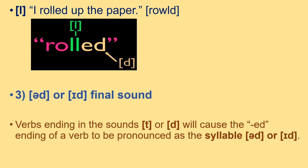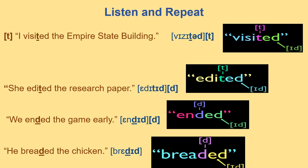Rule 3 — /ɪd/ final sound: verbs ending in the sounds /t/ or /d/ will cause the -ed ending to be pronounced as the syllable /ɪd/. Listen and repeat: 'I visited the Empire State Building' — visited. 'She edited the research paper' — edited. 'We ended the game early' — ended. 'He braided the chicken' — braided.